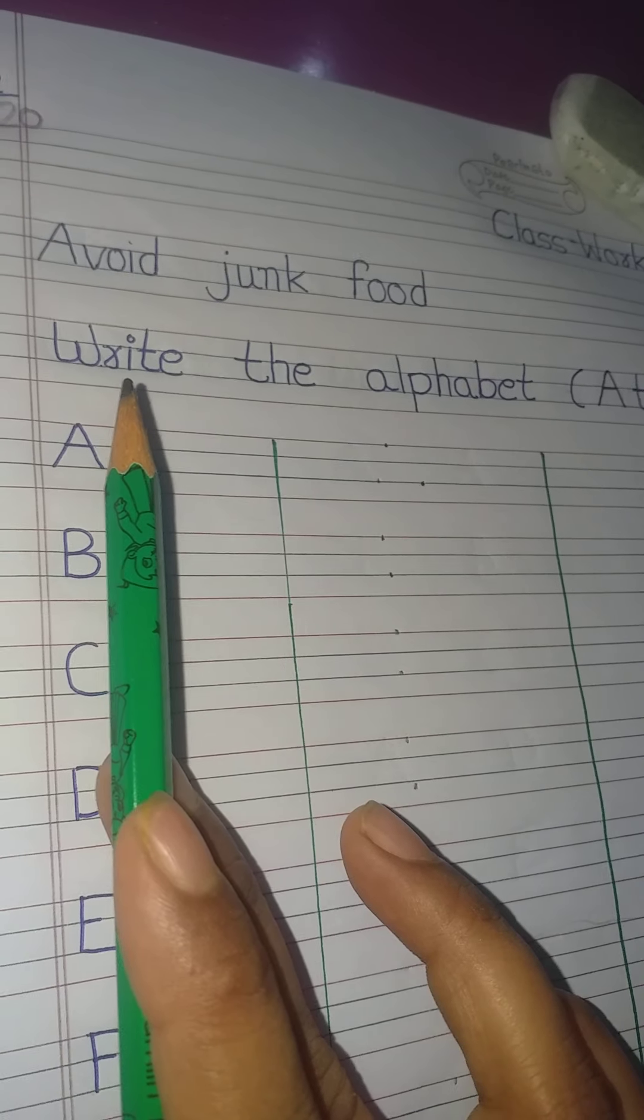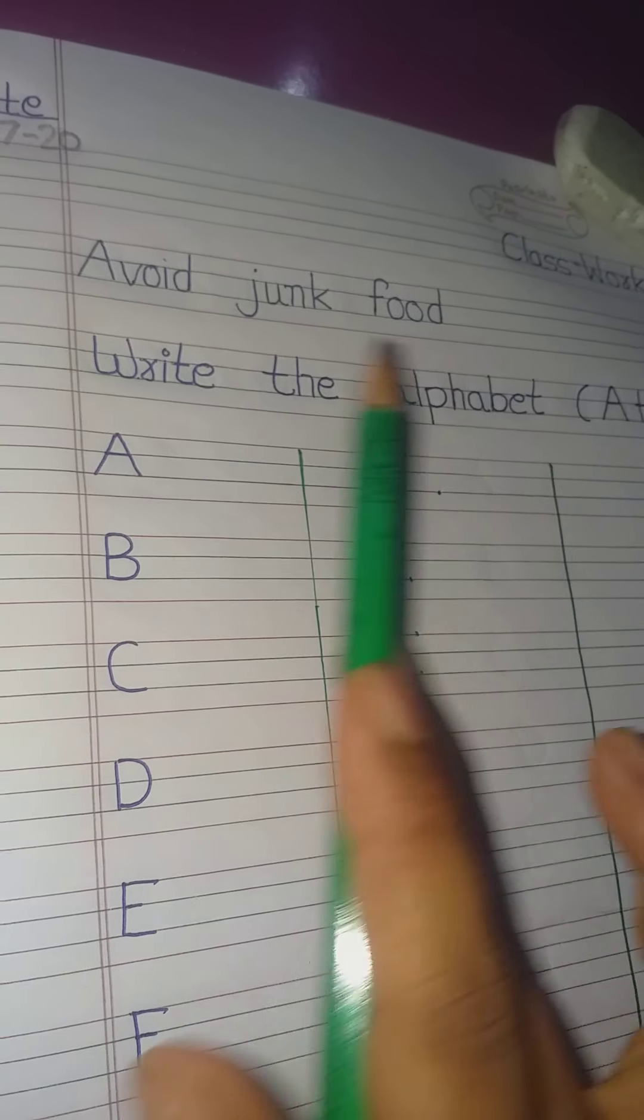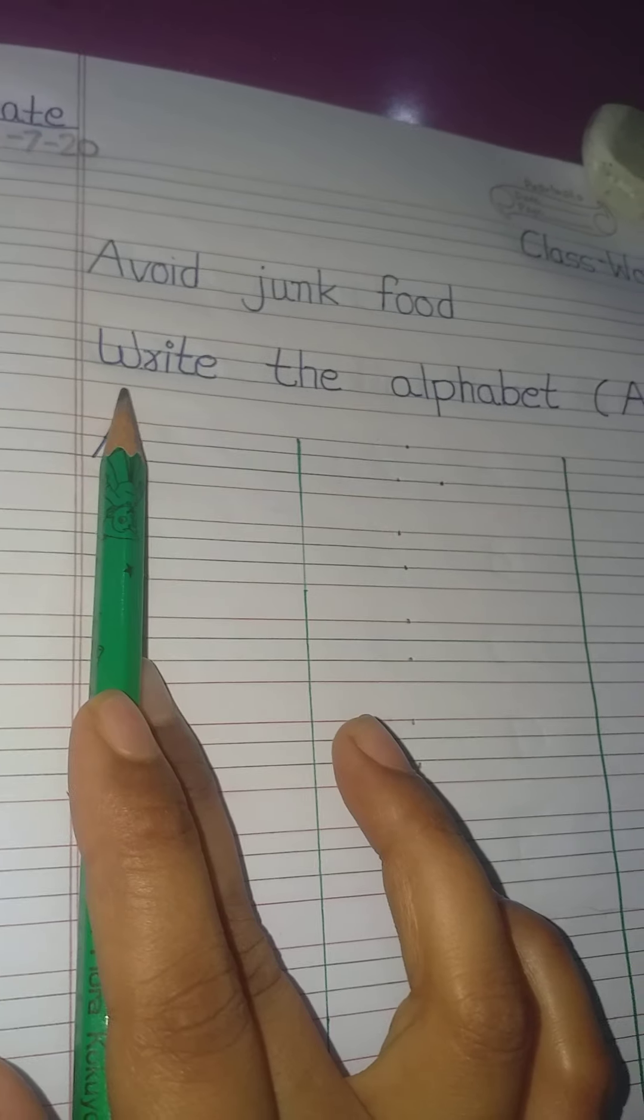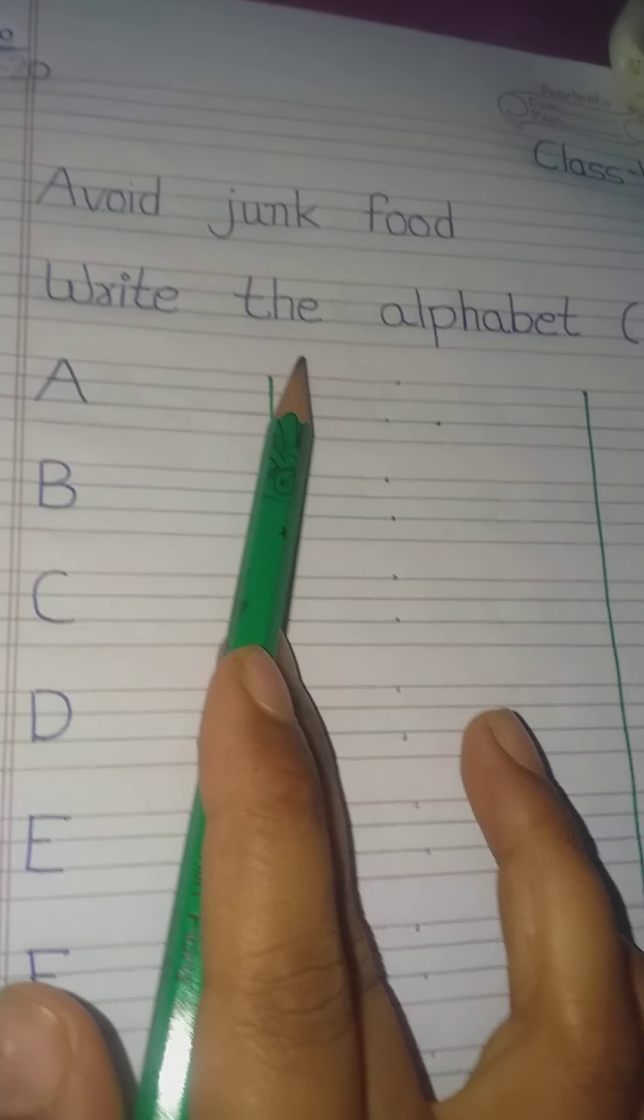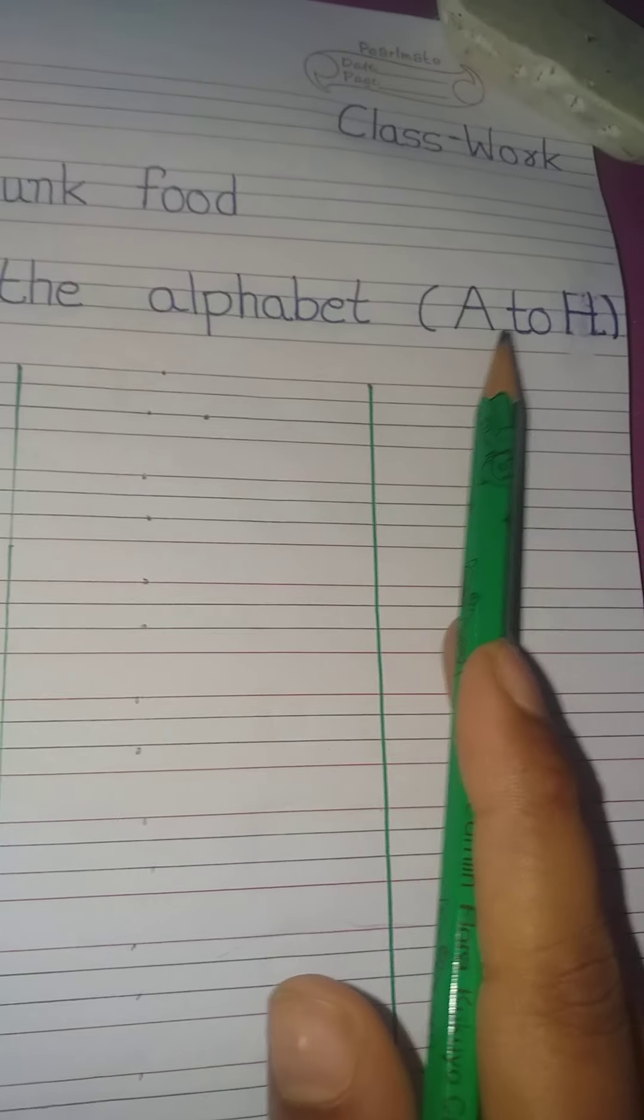First of all, after completing the thought of the day, write a heading. Write W-R-I-T-E. Write the alphabet A to H.